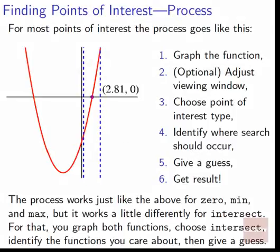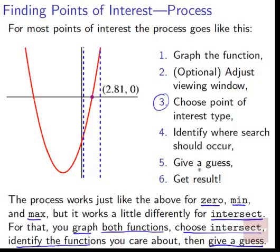The process works pretty much just like this for if you're looking for the zero, the minimum, or the maximum. But it works a little bit differently if you're looking for the intersection of two functions. For that, you graph both functions. So you'll have to graph one of the functions, and then you set another function graphing the other one. Then you'll choose Intersect in your menu. You choose your point of interest type. You identify the two functions. So instead of identifying where the search occurs between what locations, you say, here's the first function I care about, here's the second function I care about. And then you give some guess of about where you think the intersection occurs. And then once again, it runs through some algorithm, and it figures out where is the actual intersection.